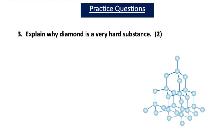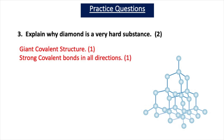The final practice question on diamond and graphite asks you to explain why diamond is a very hard substance. Diamond has a giant covalent structure with strong covalent bonds in all directions, which makes it very hard.